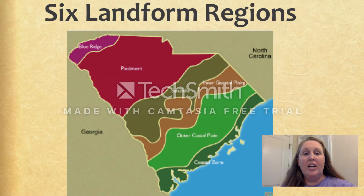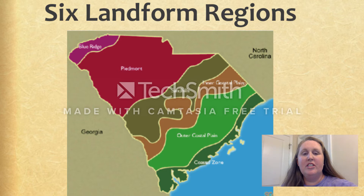You already know that South Carolina has six landform regions. Our landforms consist of the Blue Ridge region, the Piedmont region, the Sandhills region, the Intercoastal Plain, the Outer Coastal Plain, and the Coastal Zone.